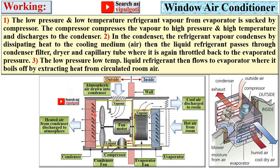In the condenser, the refrigerant vapor condenses by dissipating heat to the cooling medium and that is generally air. Then it is converted into the liquid refrigerant by rejecting the latent heat to the atmosphere. And then liquid refrigerant passes through the condenser filter.